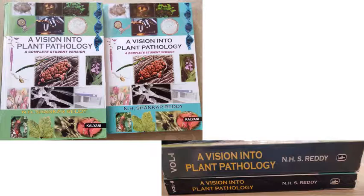Expected exam questions may include the causal organism of pink disease, and the most important one is leaf rust caused by Hemileia vastatrix — including questions about where it was first severe, and what year it was introduced into India. This topic is covered in the book 'A Vision into Plant Pathology: Complete Student Version,' recently published by the speaker, which is very useful for plant pathology students.